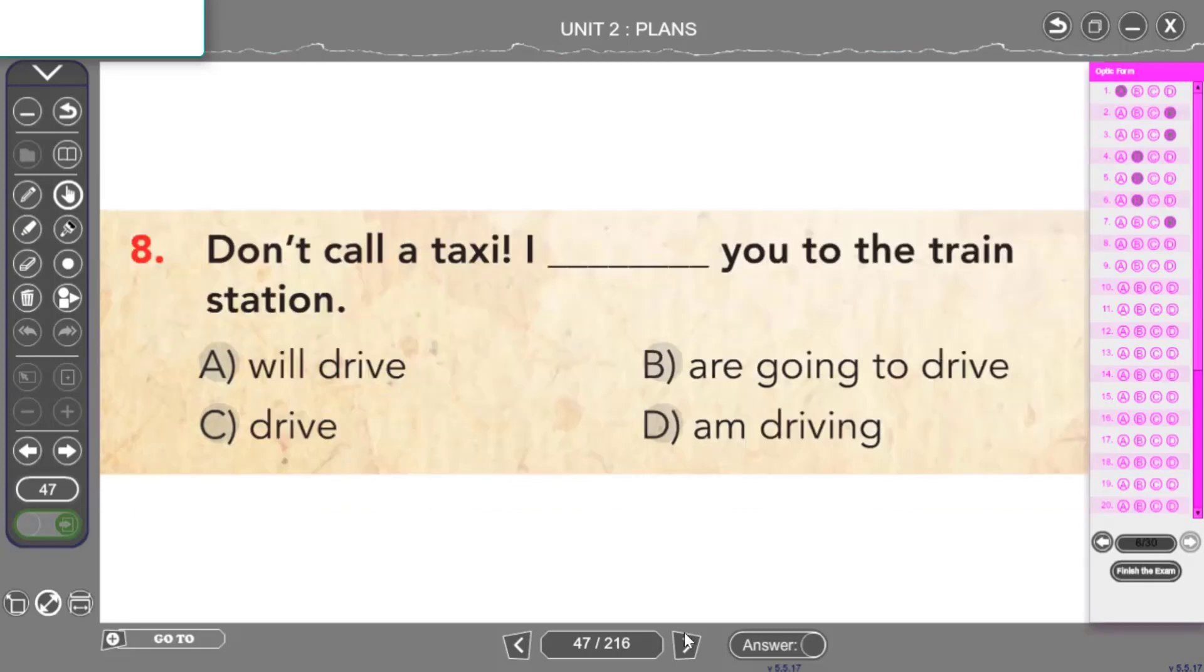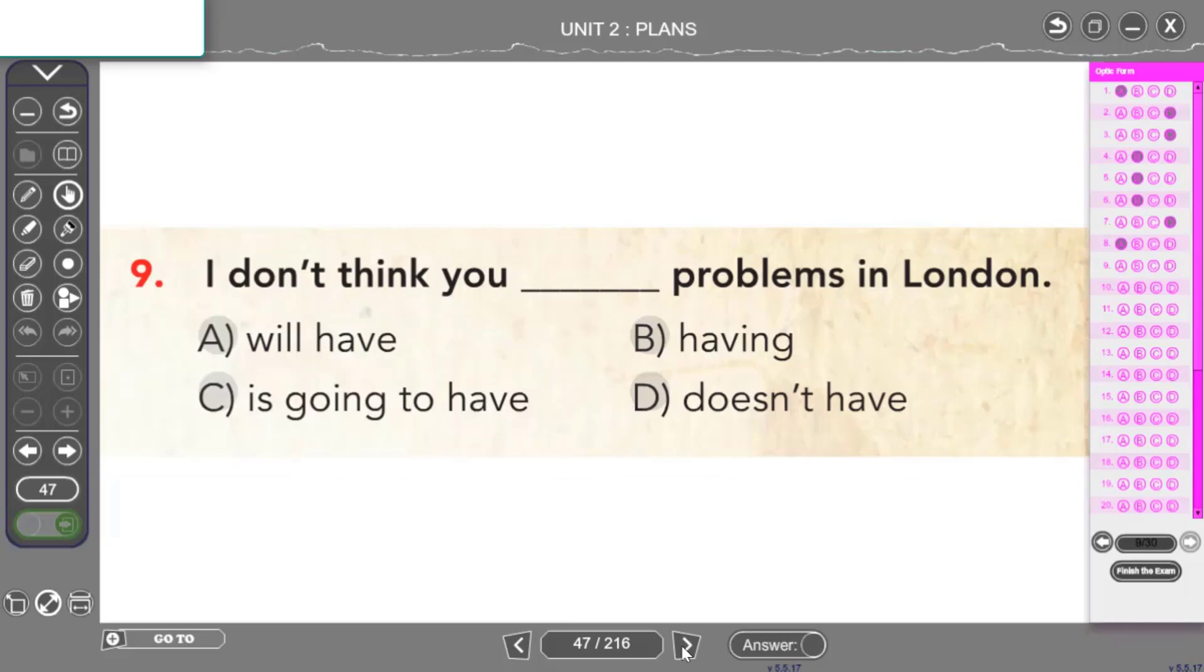Don't call a taxi. Taksi çağırma. I will drive you to the train station. Seni tren istasyonuna götüreceğim diyeceğiz. Yine anlık bir olay gördüğünüz gibi o anda yapılan bir konuşma olduğu için ne kullanmam lazım? Gelecek zaman anlatmak için will yapısını kullanmam lazım. I don't think you will have problems in London. Londra'da sorun yaşayacağını sanmıyorum dedim. Yine kendimizce bir tahminde bulunduğumuz için herhangi bir kanıtımız olmadığı için ne kullanmam gerekiyor? Will kullanmam gerekiyor.